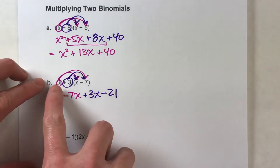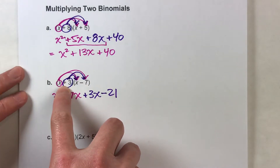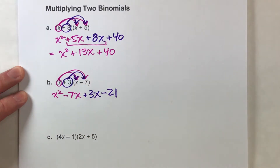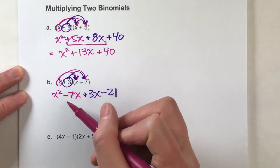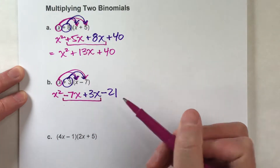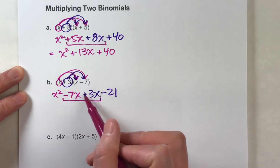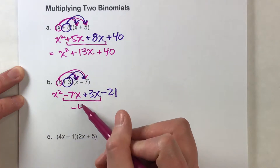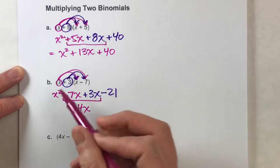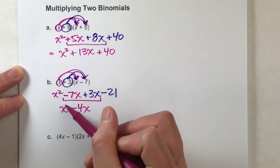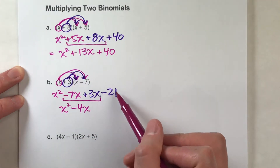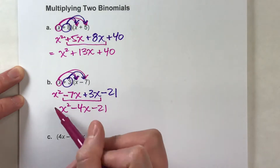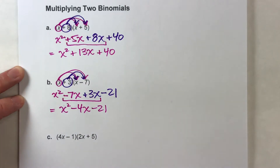I've multiplied every single term in the first set of parentheses by every single term in the second set of parentheses. Now I can combine like terms and be done. I've got two groups of x's — negative 7x plus 3x gets me negative 4x. There's no other x squared, so I'll just drop that down. There's no other regular numbers, so I'll drop that down. There it is: x squared minus 4x minus 21.